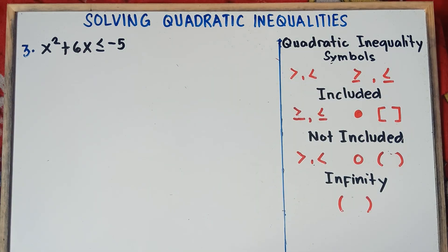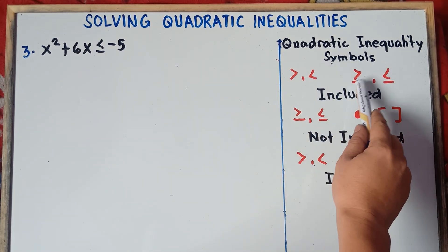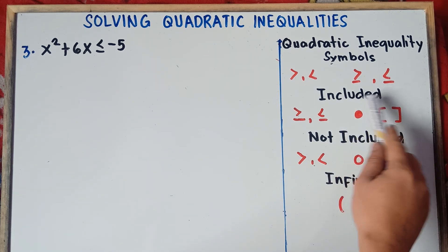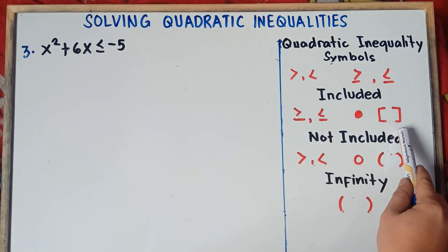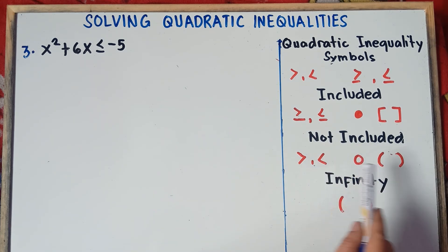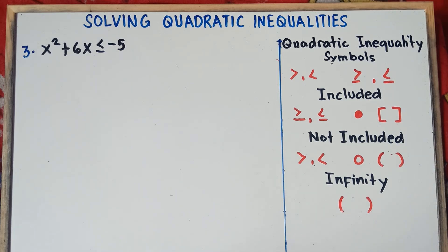Once again, these are the quadratic inequality symbols. We have greater than, less than, greater than or equal, and less than or equal. For included values — greater than or equal and less than or equal — we use a closed circle and brackets. For not included — greater than and less than — we use an open circle and parentheses. For infinity, always use parentheses. This is very important in making solution sets. Before you solve quadratic inequalities, you need to master how to make solution sets. I'll put the link in the description down below.